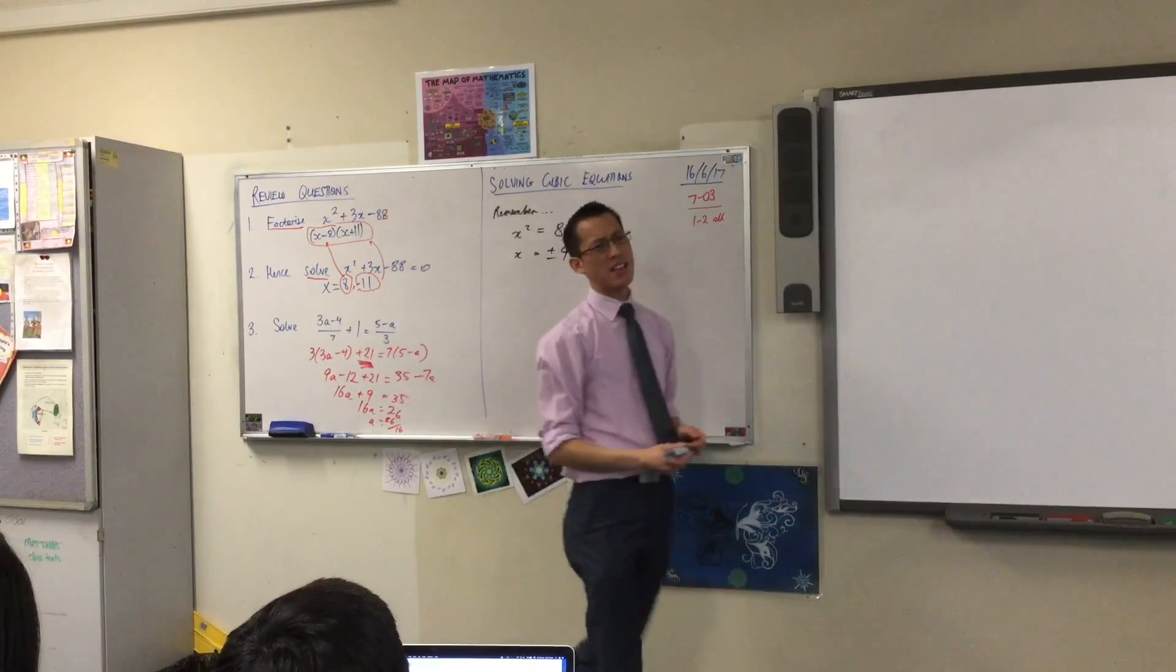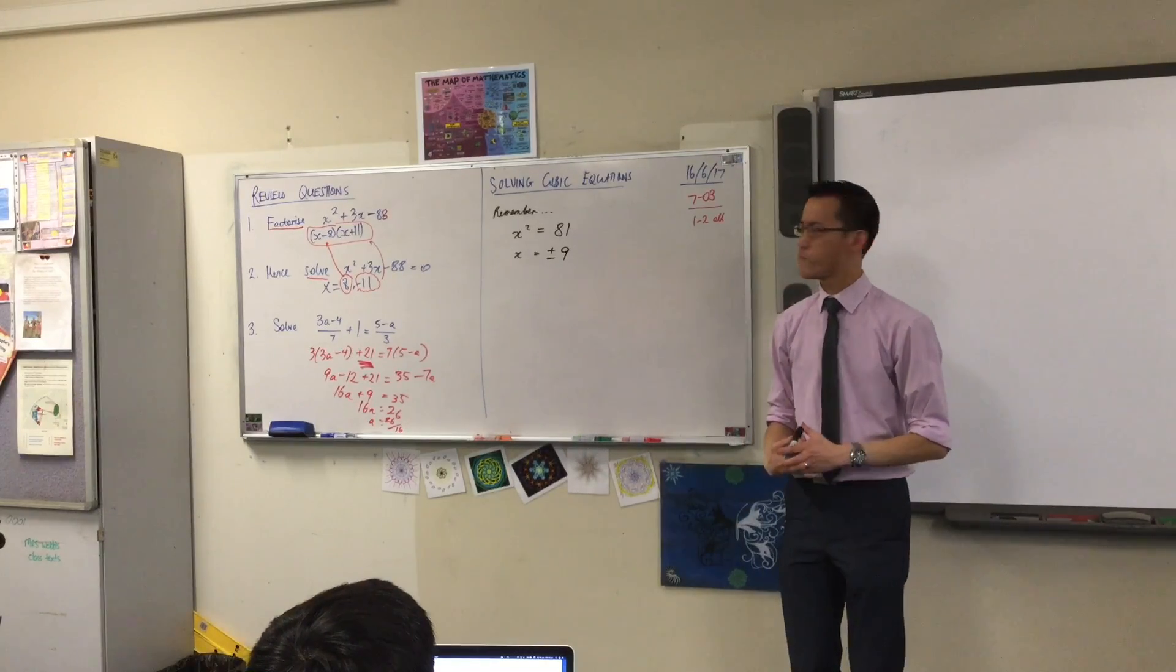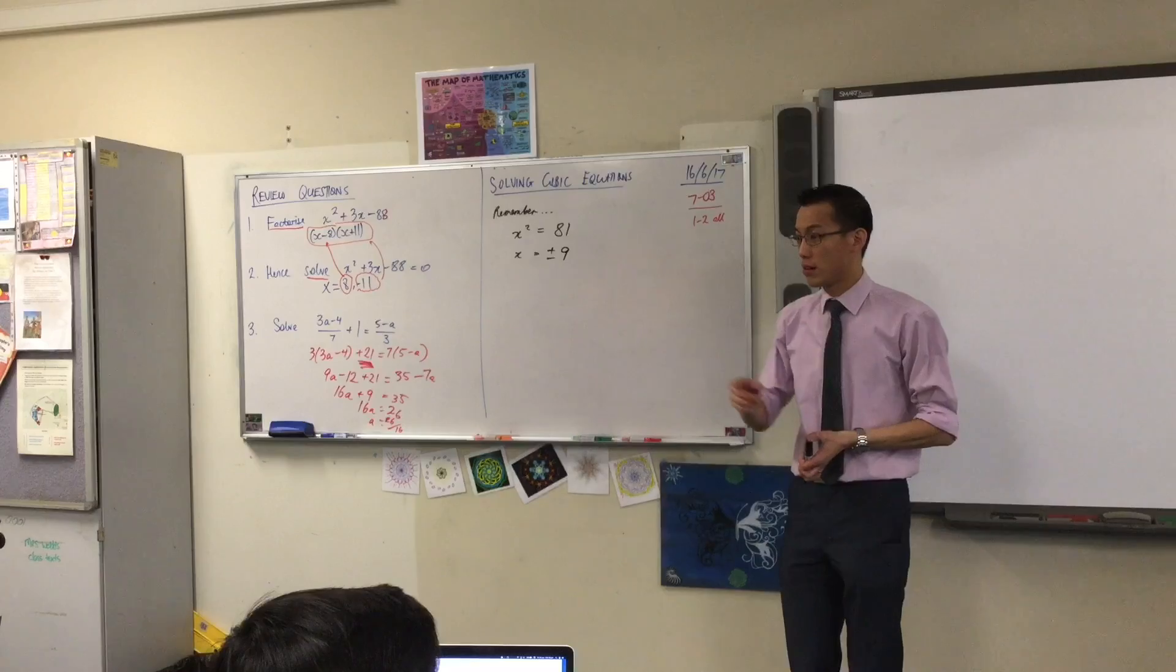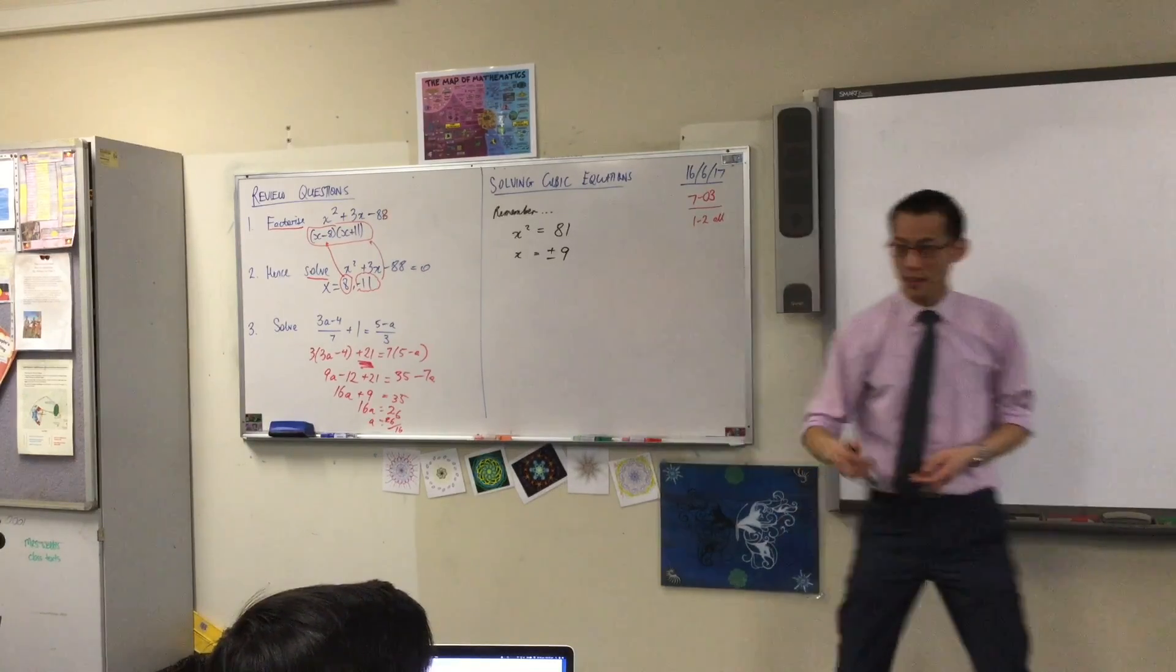Can you remind me why there are two solutions? Why are there two solutions? Because negative 9 squared equals 81. Yeah, very good. Let's hold that thought.